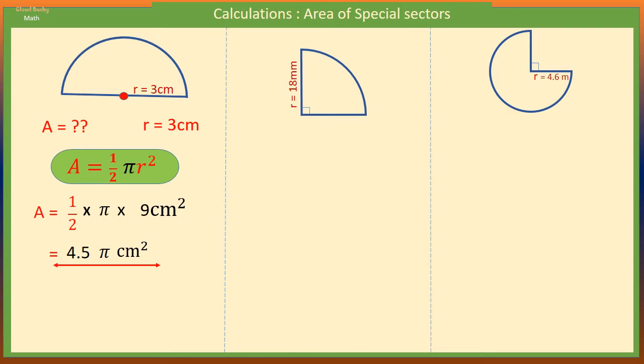We are going to leave our answer in terms of π. Otherwise, if it is required, we can replace π with 22/7 to get 99/7 square centimeters.